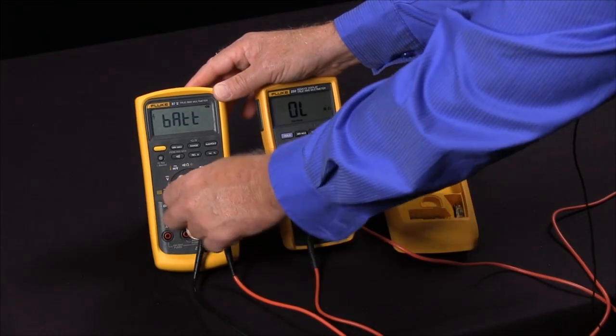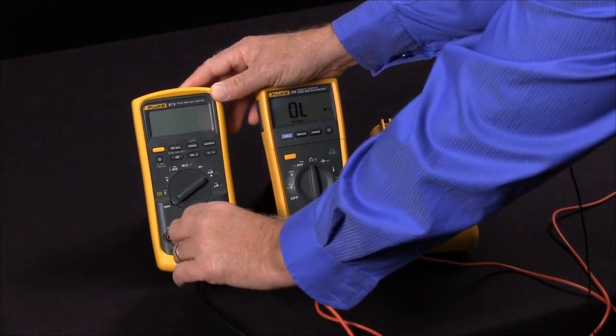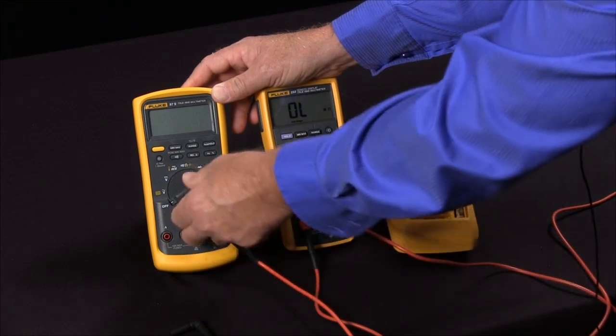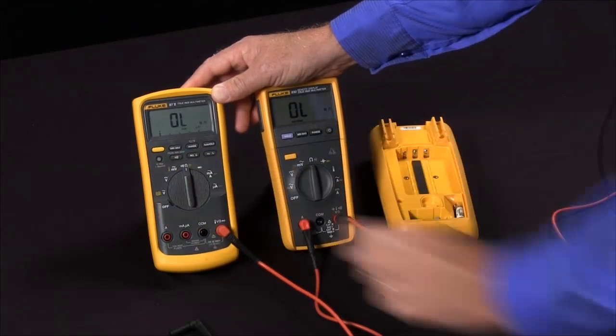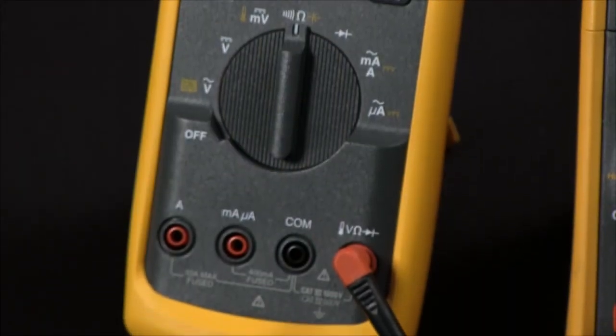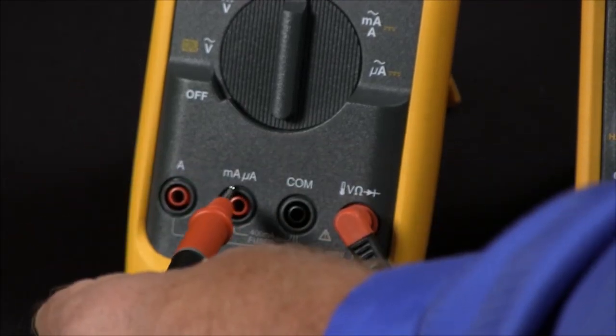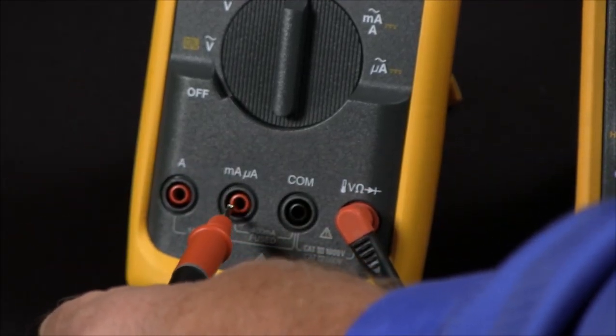If we go over to the Fluke 87, again I will only use one of the test leads. I will go to the ohm input indicator and take my test lead and test each of these two current input jacks.